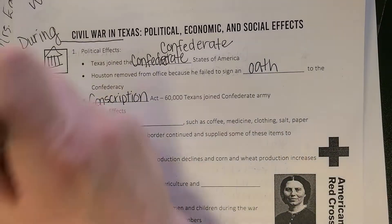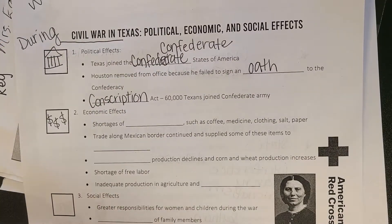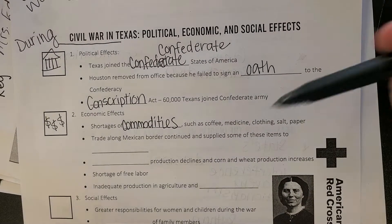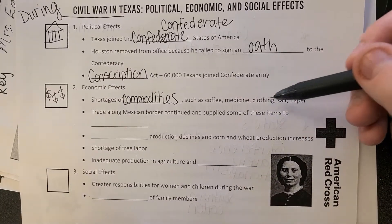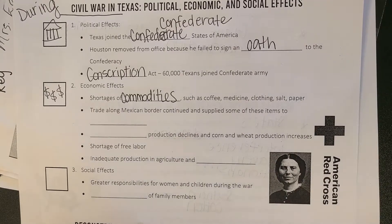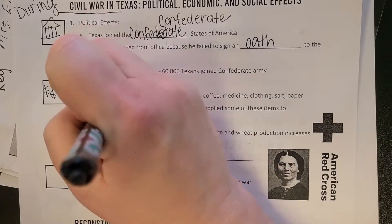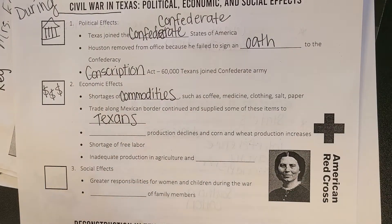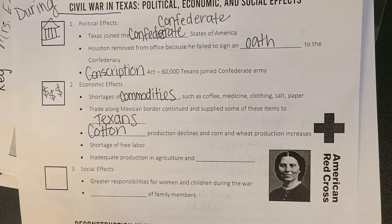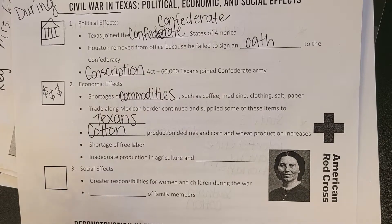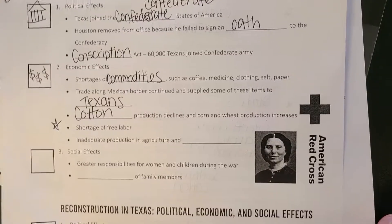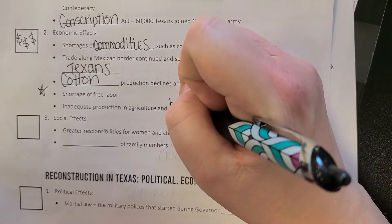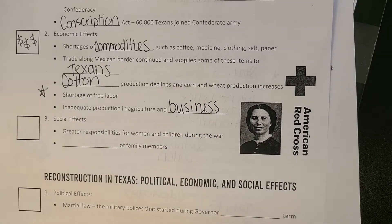Economically speaking, there is a shortage of commodities — things you need like coffee, medicine, clothing, salt, pepper, and food in general. Texas trades along the Mexican border for goods, and then Texans distribute those goods among the southern states. There's also cotton production that declines and a shortage of free labor. There is inadequate production in agriculture and in business, which negatively affects everyone in the state.